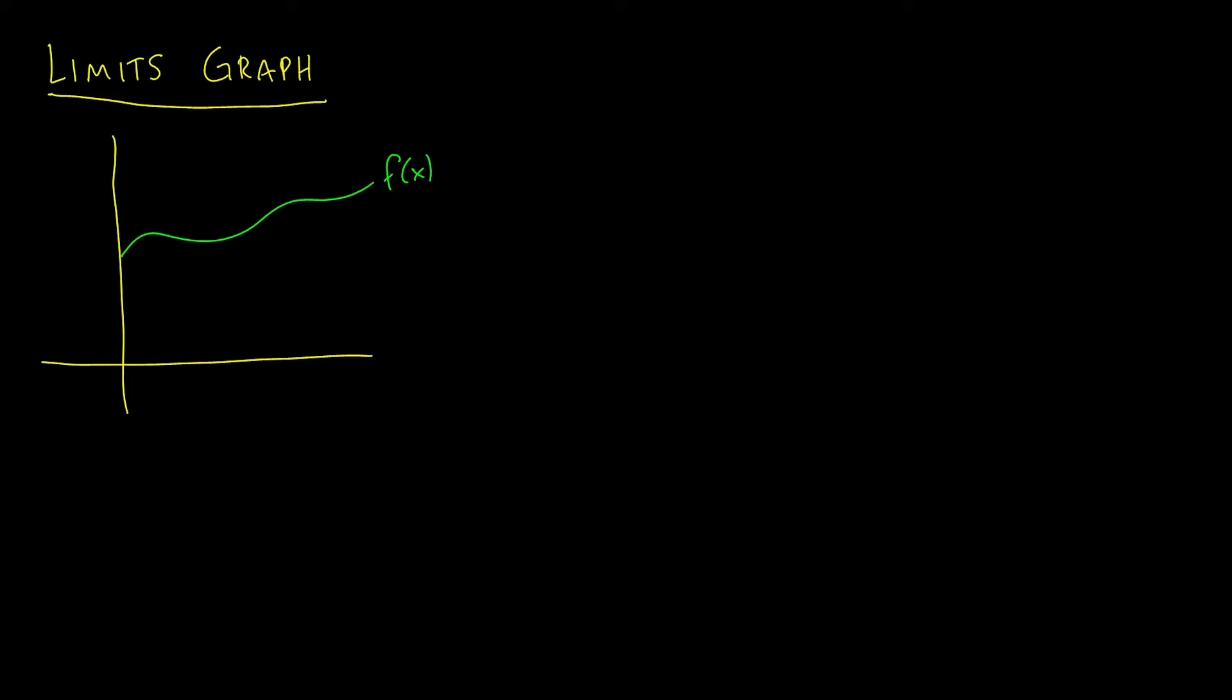All right, so I'll pick some point A, again, to remind you guys that it has some limit L, and then we say that the limit as x approaches A of f of x is equal to L. So this is a very simple graph because it's defined. It is nice, and it is defined, but there are other things that can happen in these graphs. So let's take a look at one of those.